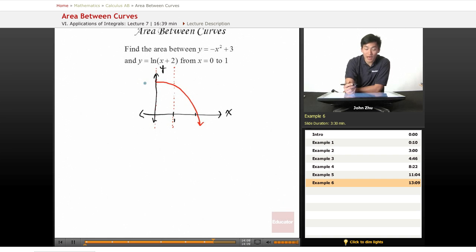And ln of x plus two is simply ln of x plus two is just ln of x shifted to the left two units.